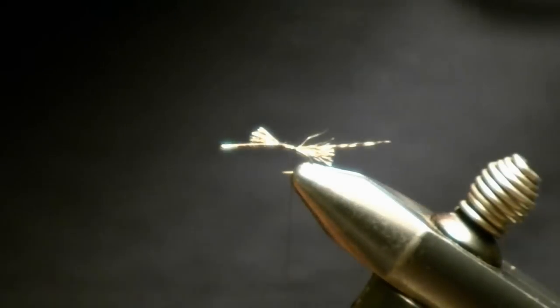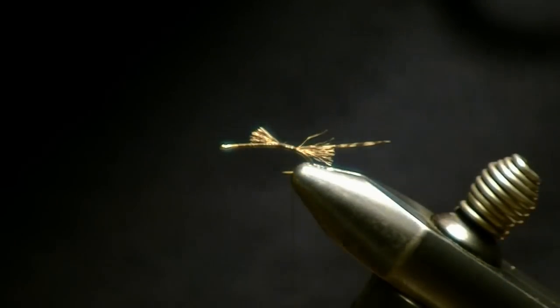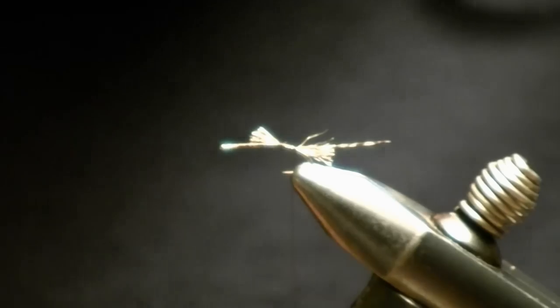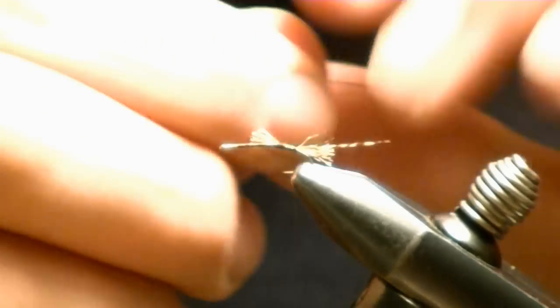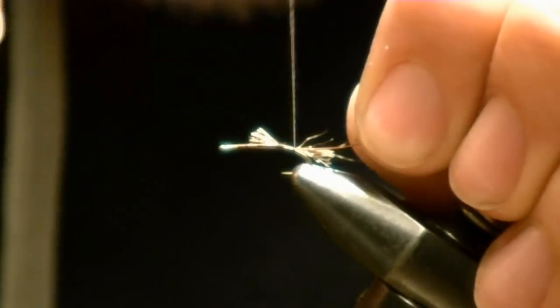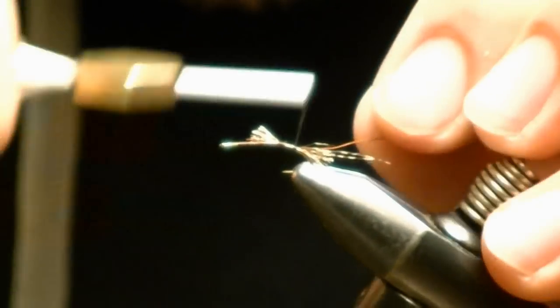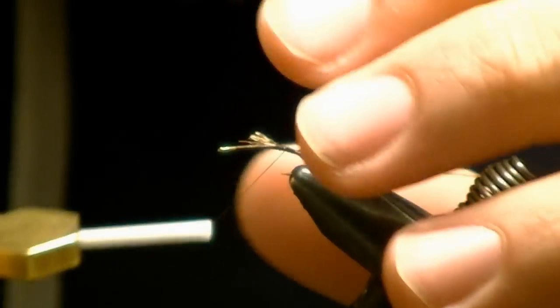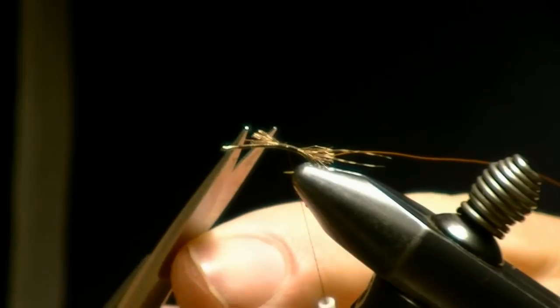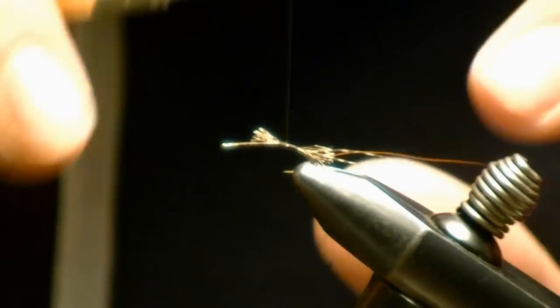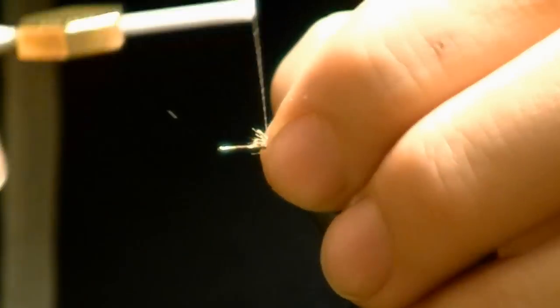Take a piece of small brown ultra-wire and tie that in. I'm going to clip it, moving out the rest of the fibers here, and I'm going to tie all these down.